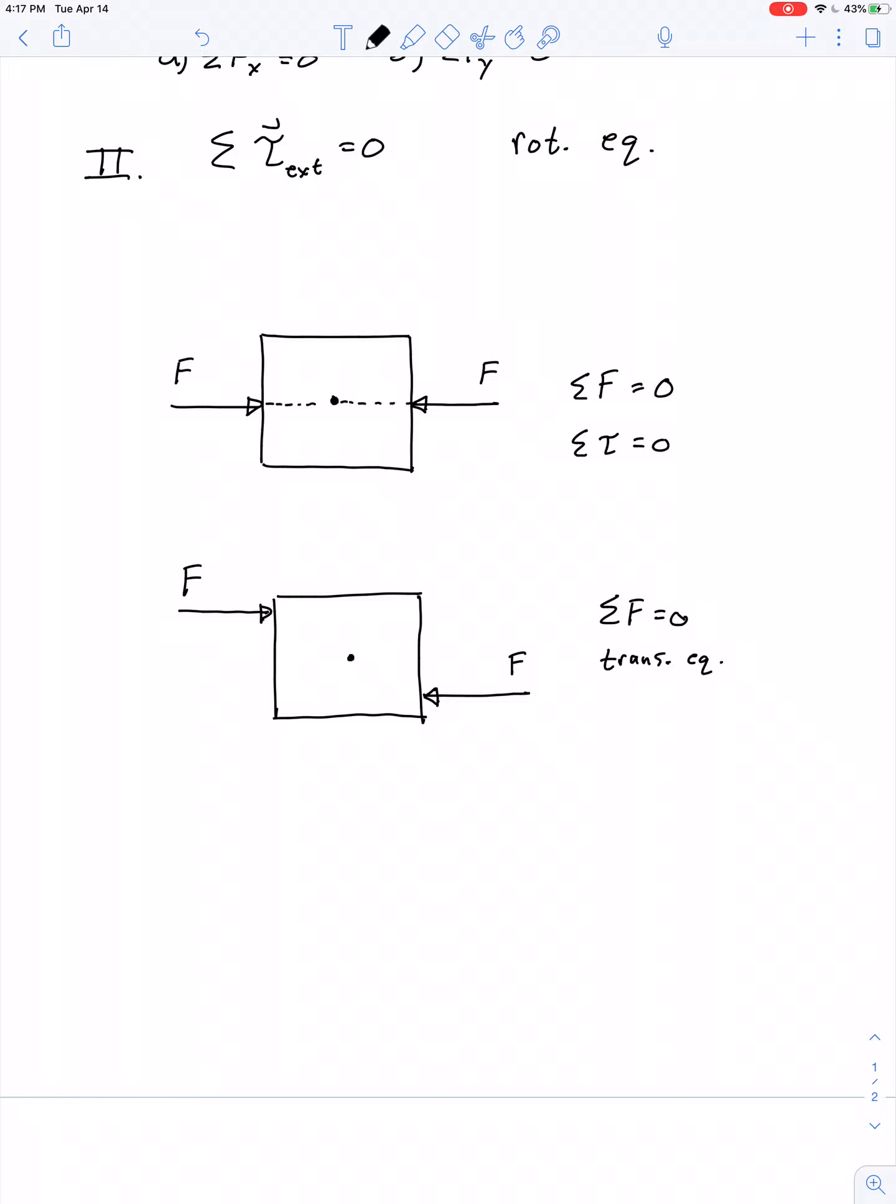However, there's a net torque. So if we extend the line of force and find a distance perpendicular to that line of force, there's some R perpendicular, which represents a lever arm. And so we've got a force and a lever arm. There's a torque, and this torque would tend to make this rotate in a clockwise direction in the very same way that the